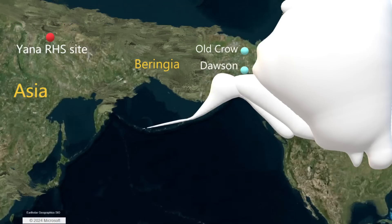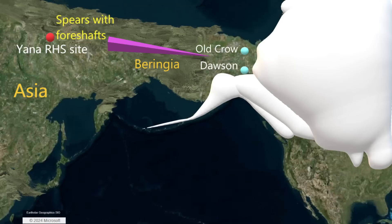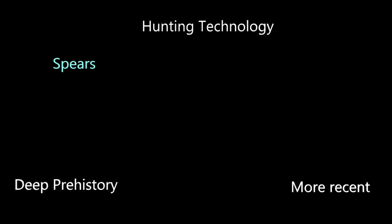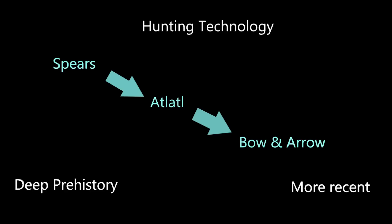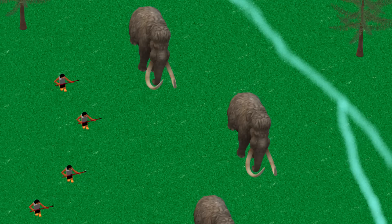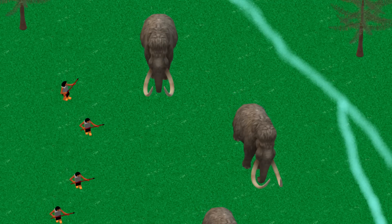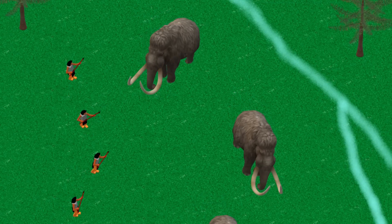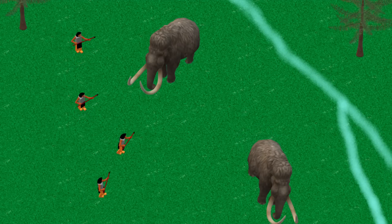It is also believed that the technology of foreshafts, seen at sites like Yana RHS in Siberia, were brought over into America. In this deepened prehistory, human hunters are using spears for large game. Atlatls and bows are distant technologies that will not exist for tens of thousands of years yet. Foreshafts help to protect the main spear shaft from damage after a strike. The hunter can quickly replace the point on the end of his spear without having to manufacture a new spear each time he throws it.